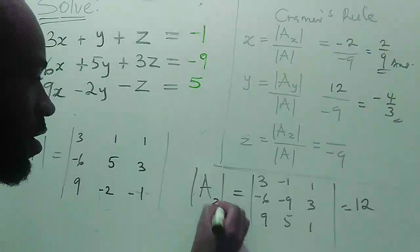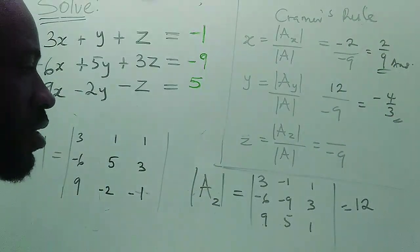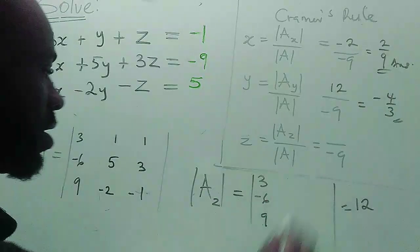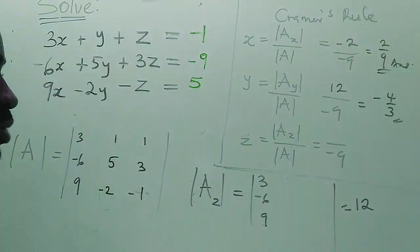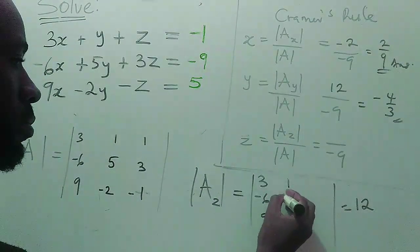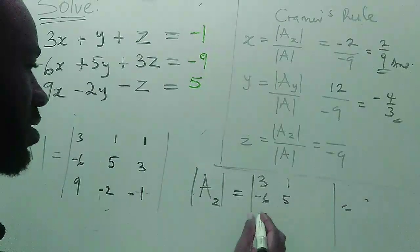So we do the same thing to get our z. To get our z, z is the third column, so we replace our third column.